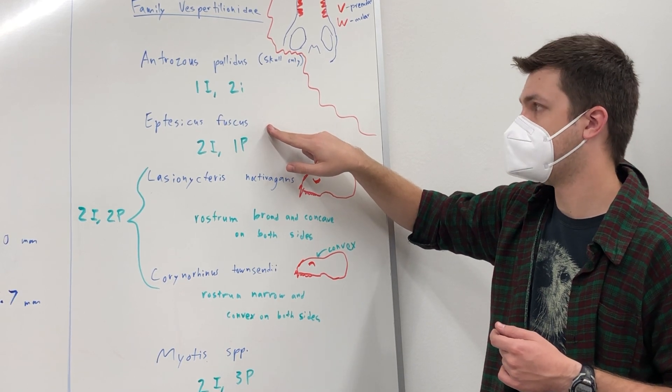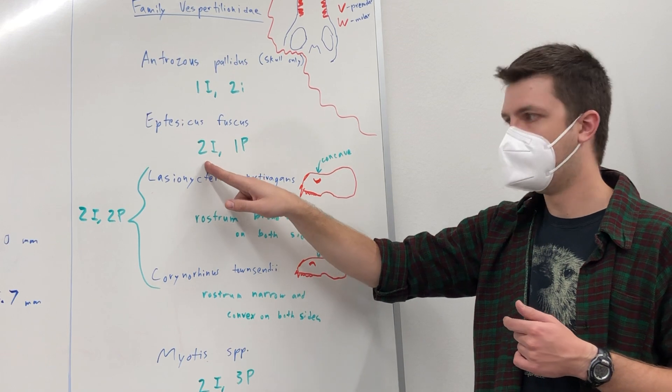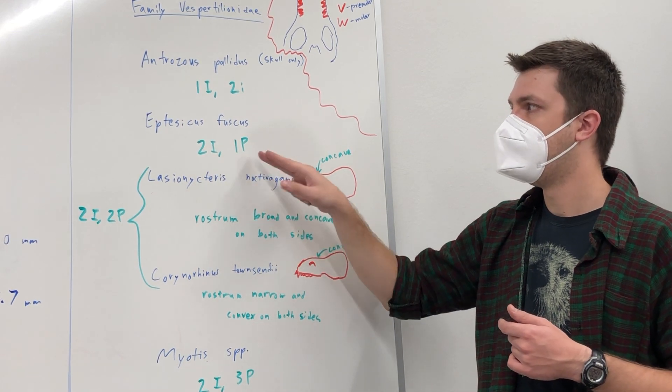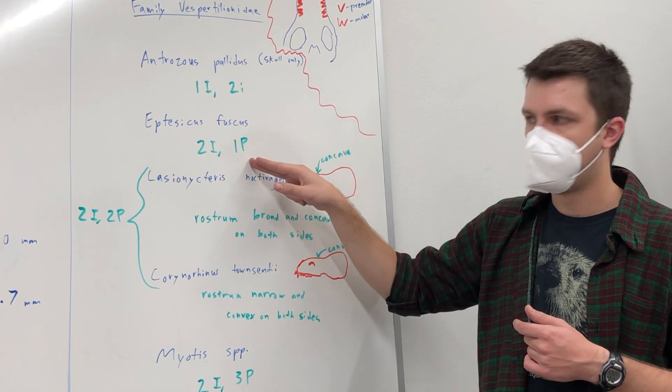Eptesicus fuscus, the big brown bat, has two upper incisors and one upper premolar.